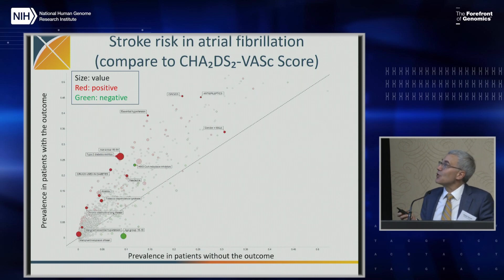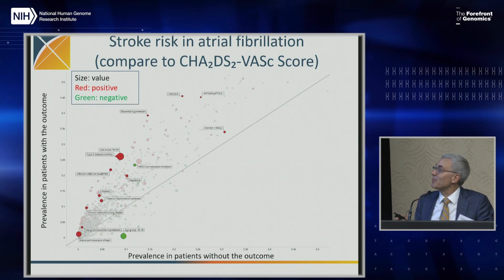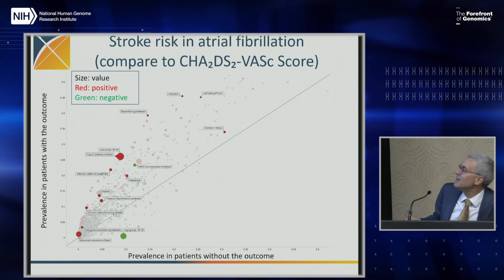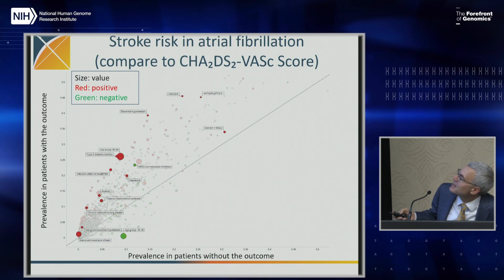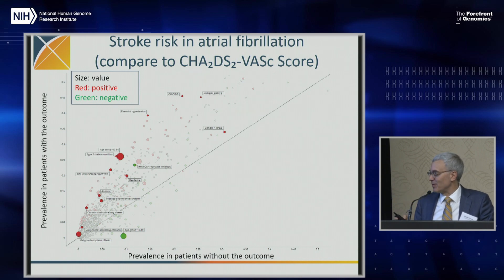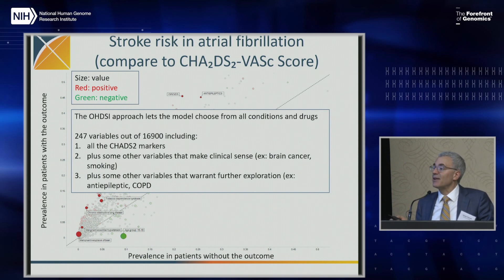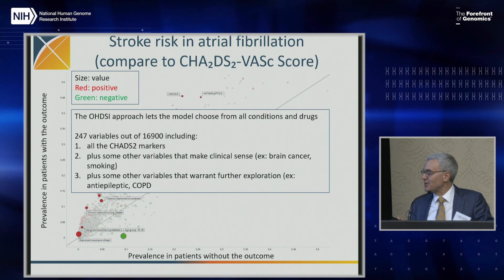Here's an example: stroke risk in the setting of atrial fibrillation. Green means protective, red means harmful. We see that younger patients are less likely, and patients with type 2 diabetes are more likely to get a stroke in the setting of atrial fibrillation. When we do this analysis, first we duplicate the current clinical predictor — the CHADS2 predictor. We find other variables that make sense, and we find other variables we need to look into further.